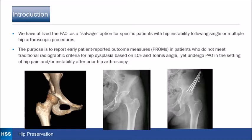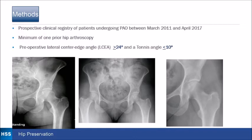This was a prospective clinical registry of patients, and we looked at PAOs between March 2011 and April 2017 with a minimum of one prior hip arthroscopy. The preoperative lateral center edge angle had to be greater than or equal to 24 degrees, or a tonus angle less than or equal to 10 degrees.